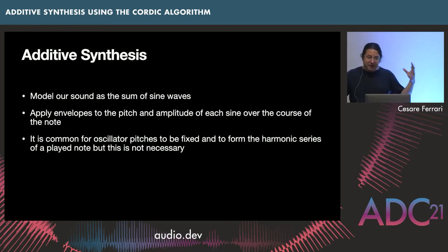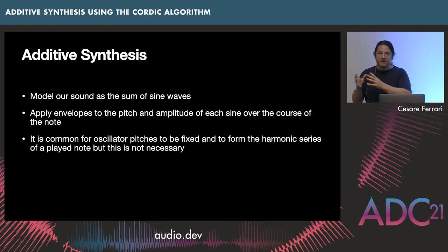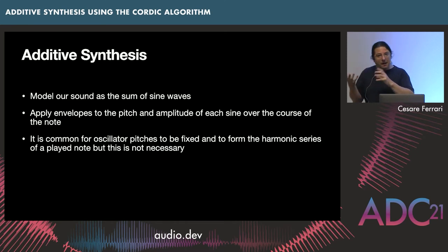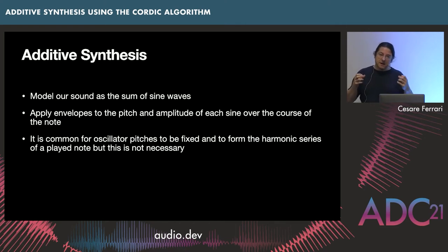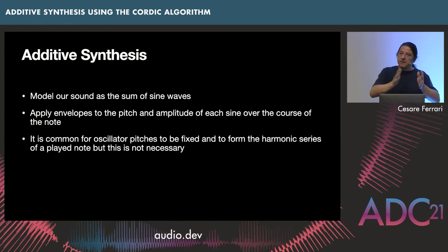We'd need a number of sine waves where we can specify the pitch and amplitude of each. If you look at the timbre of a sound, it isn't static except in some rare and somewhat boring situations. Most real instruments, the timbre changes over the life of the note. So we want to modulate pitch and amplitude over the life of the note. Pitch is interesting because in most real instruments the relationship between the fundamental and the overtones is integer ratios — a harmonic series.